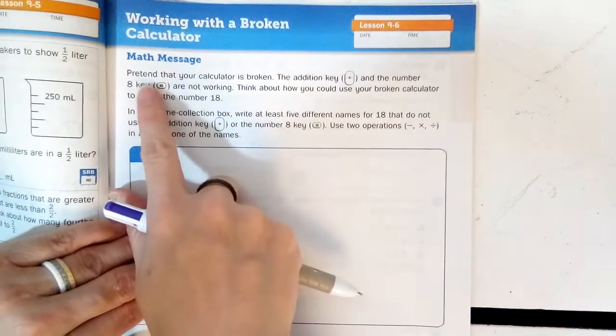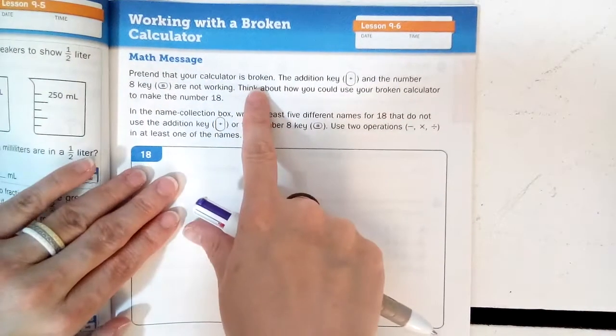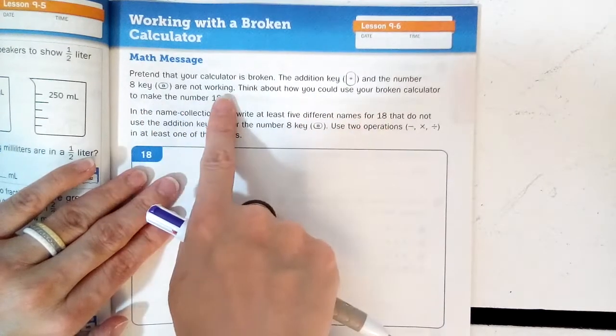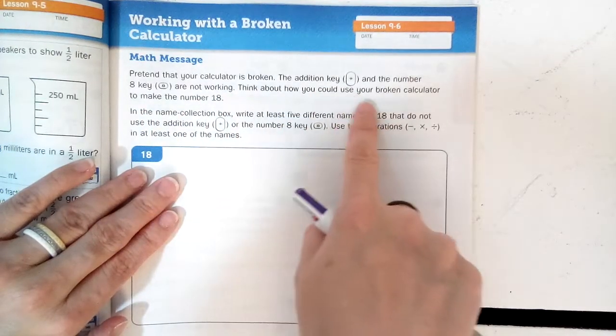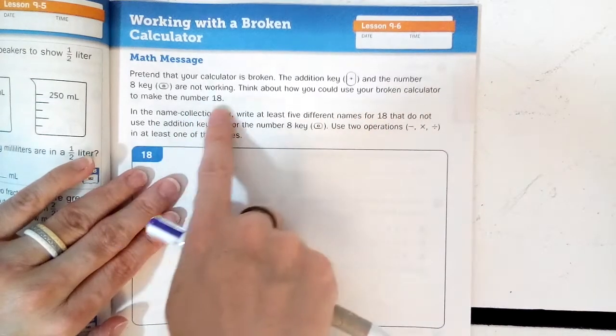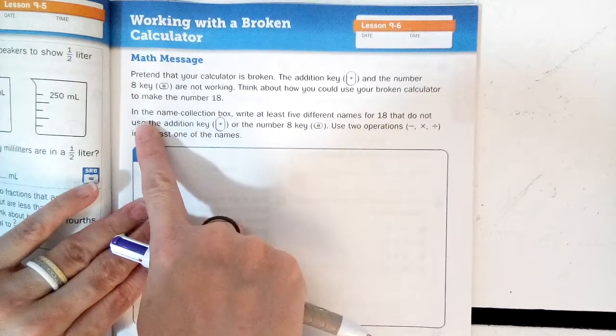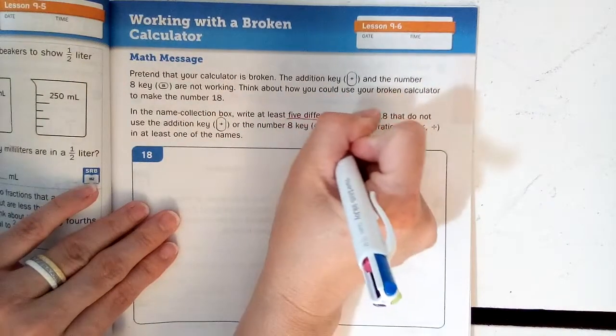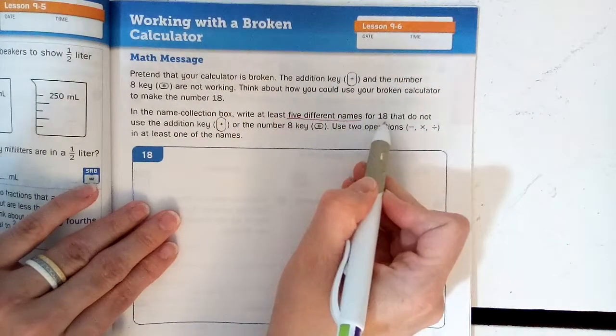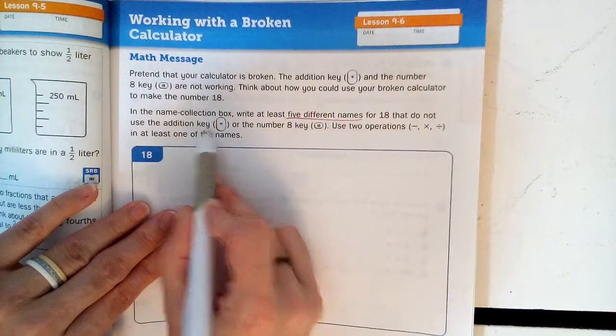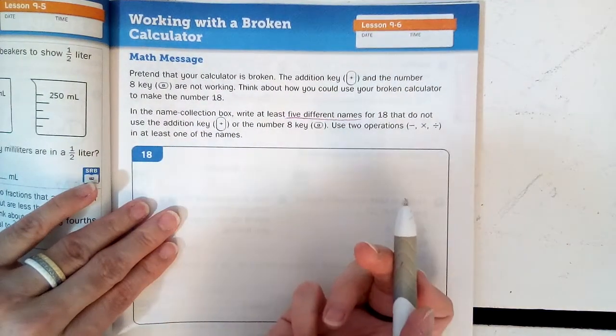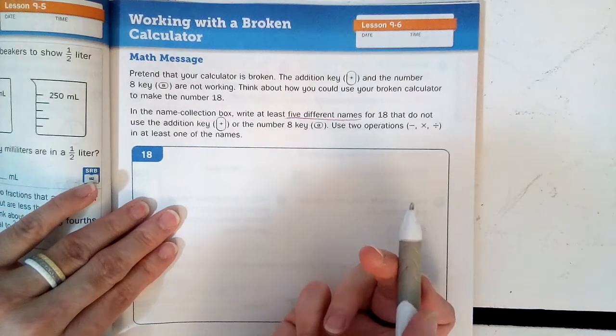It says here, pretend that your calculator is broken. The addition key and the number 8 are not working. Think about how you could use your broken calculator to make the number 18. In the name collection box, write at least five different names for 18 that do not use the addition key or the number 8. So I can't do 10 plus 8. We know that's a way to make 18, but that's not what it's telling us to do.